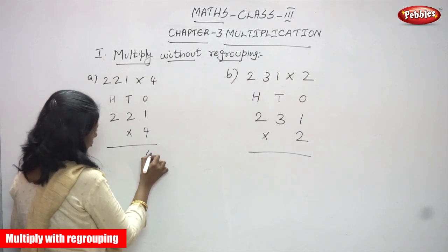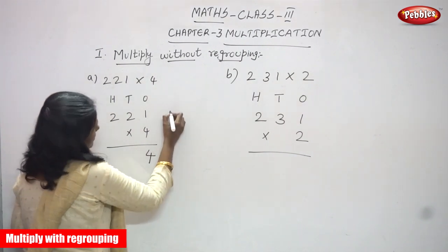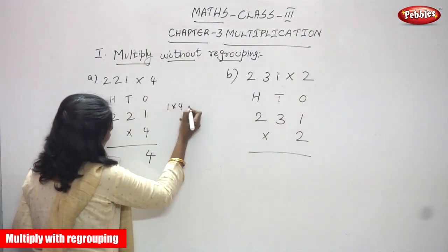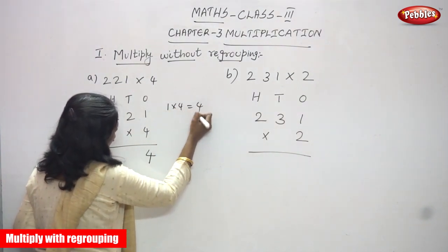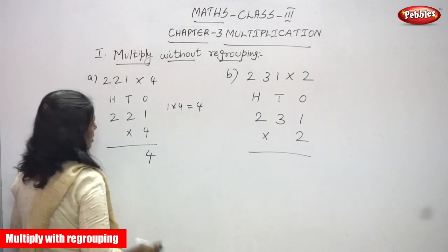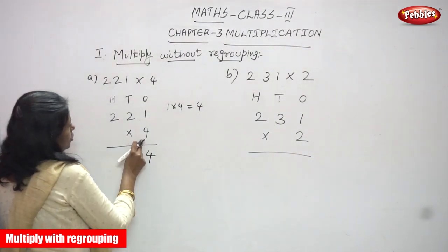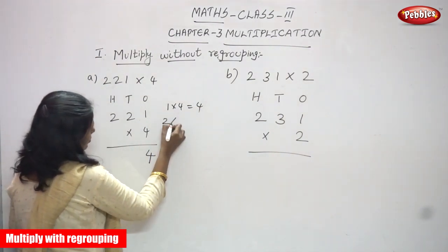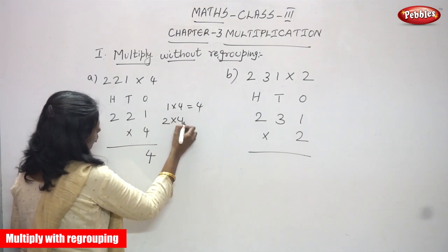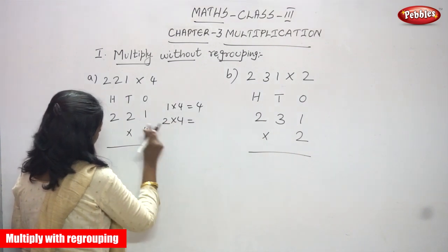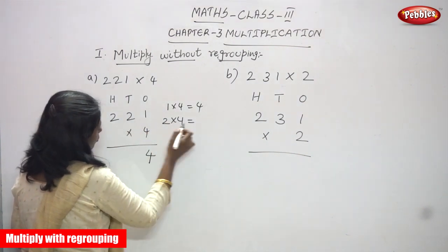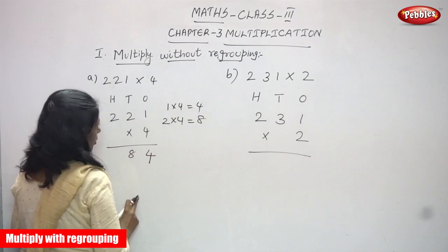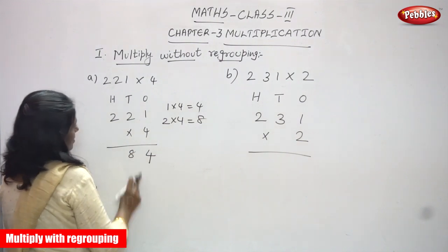So one into four equals four. That means one into four, you get four ones. I've written the four here. And two into four — using the four times table, two into four gives you eight. That is eight tens.